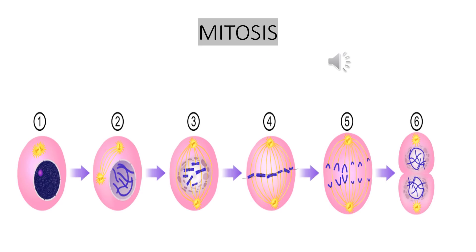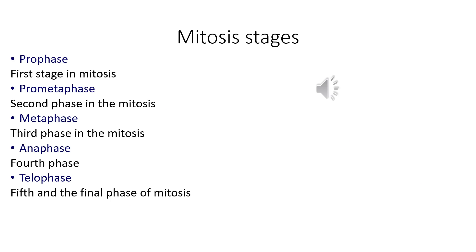Here come the different phases of mitosis: prophase, prometaphase, metaphase, anaphase, and telophase. In the diagram you can see the different phases. Prophase is the first stage, prometaphase is the second phase, metaphase is the third phase, anaphase is the fourth phase, and telophase is the fifth and final phase of mitosis.